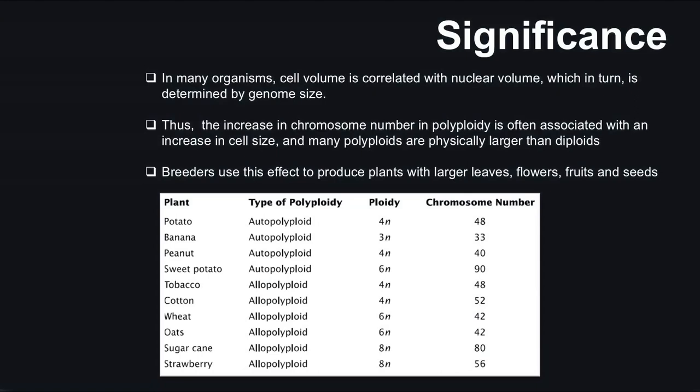Regarding the significance of polyploidy: in many organisms, cell volume is correlated with nuclear volume, which in turn is determined by genome size. In polyploidy, more chromosome sets lead to larger cell size, which is agriculturally and economically beneficial. The increase in chromosome number is associated with an increase in cell size, and many polyploids are physically larger than diploids.